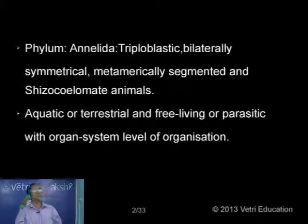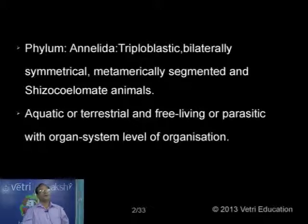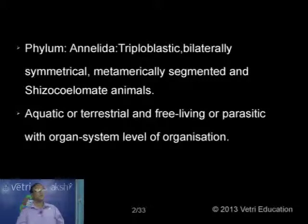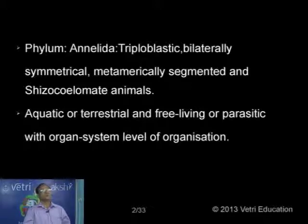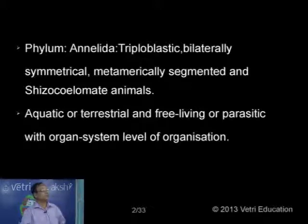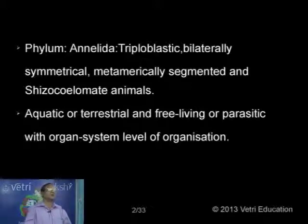Now let us pass on to the next higher group. This is the first group where you have true segmentation. The animals are triploblastic, bilaterally symmetrical. From onwards, all these animals have true segmentation. Hence these are all called the true coelomate animals.